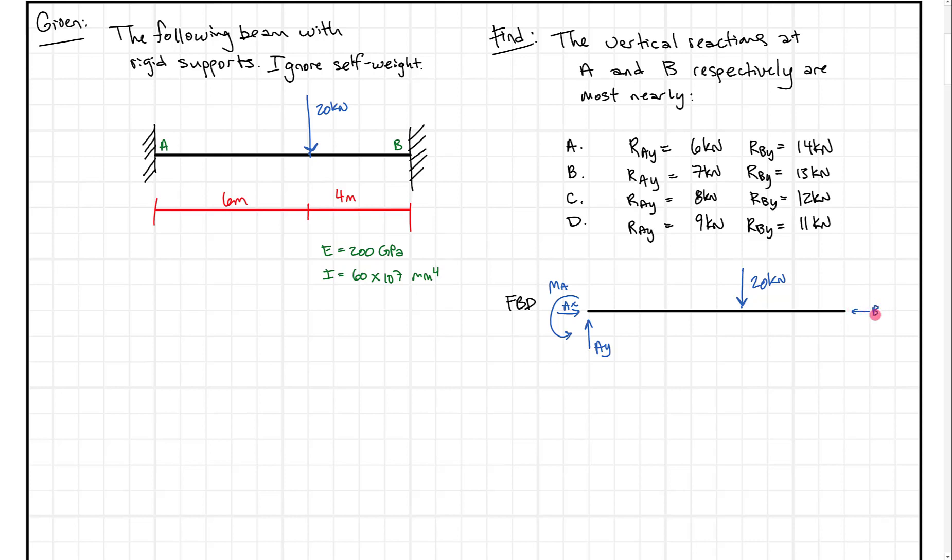We could draw Bx this way or whichever way - it doesn't really matter because we're not really concerned with Bx, but we are concerned with this By and this Ay. When you start to write down your equation, when we sum moments about point A that equals zero. Ax and Ay both pass through point A so they don't cause a moment, but this 20 kN does, so we're going to have minus 20 kN times our distance here, which is 6 meters, plus By times 10 meters.